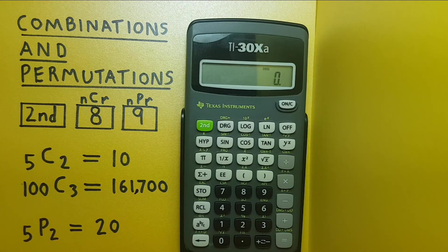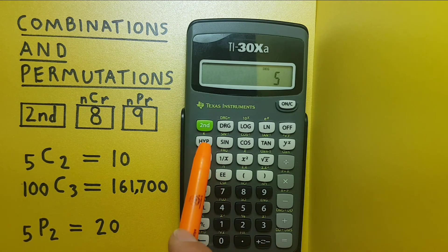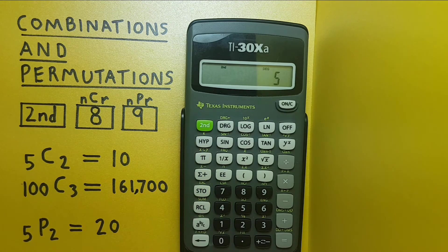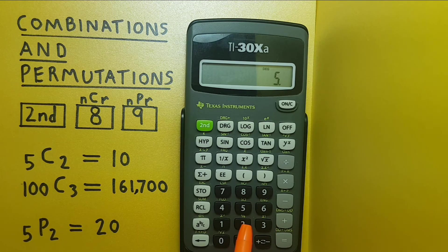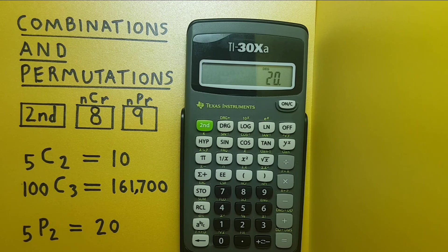Let's go ahead and try it out. Five, second function, nine, two equals. And you see there are 20 possible permutations of this.